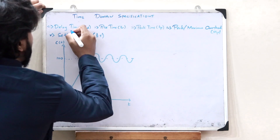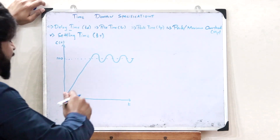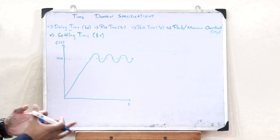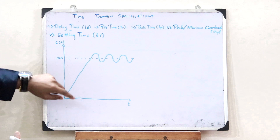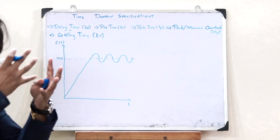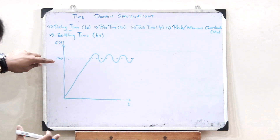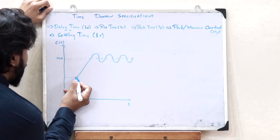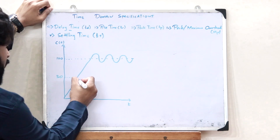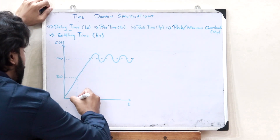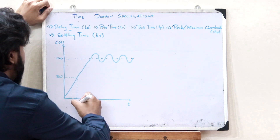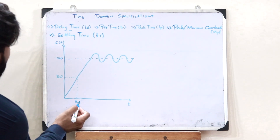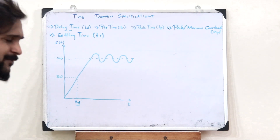First, let us see what you refer to as the delay time. Delay time is simply referred to as the amount of time that is taken by this particular control system to reach 50% of its value. So if this is the 100% value, then 50% value would be somewhere around here. The amount of time taken to reach 50% of this maximum value is simply what you refer to as the delay time.